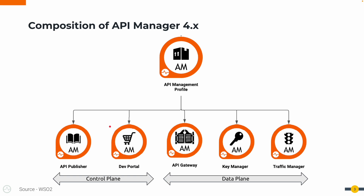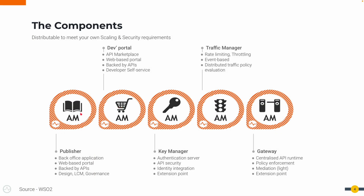So let's take a closer look at the composition of API Manager. As you can see, API Manager comes with five different components — two of them categorized as control plane and three categorized as data plane. Let's look further at what these components are and what are the different uses of these components.